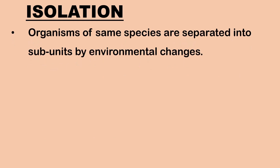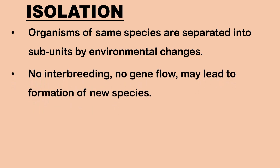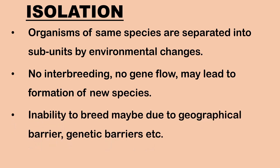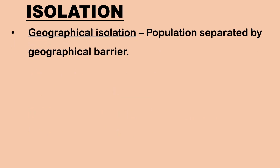Isolation: organisms of the same species are separated into several subunits as a result of environmental changes. Interbreeding between isolated groups cannot take place, there is no gene flow, and it may lead to the formation of new species. The inability of a species to breed successfully with related species may be due to geographical barriers, behavioral barriers, physiological barriers or genetic barriers. Geographical isolation occurs when a population is separated into two or more groups by geographical barriers like river, mountain, forest, etc.